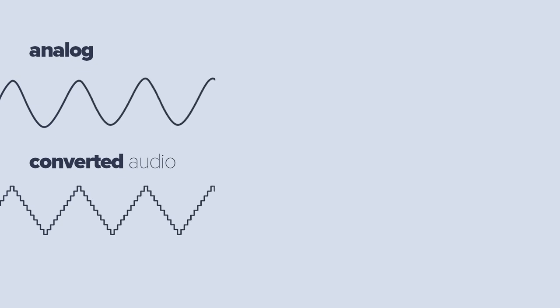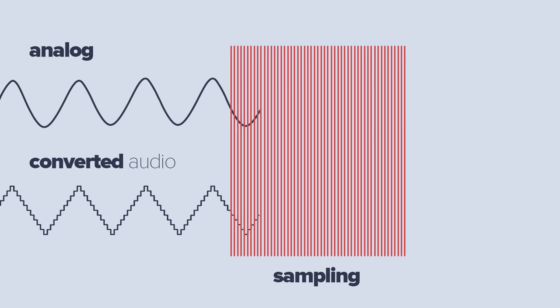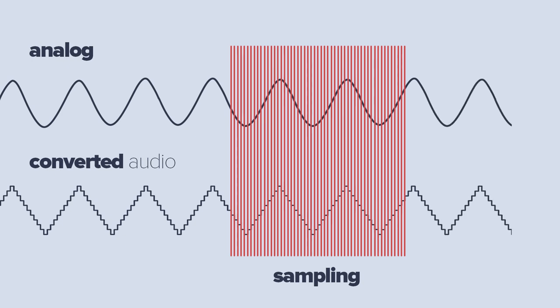Red lines represent the points that converters create. Then, based on them, the digital reproduction of sound is made. The number of points is determined by our sample rate — 44.1 kHz for compact disc — which means the audio is being sampled 44.1 thousand times per second while recording on a CD. So basically, the higher the number, the more samples are made and the audio reproduction is more precise. But why 44.1?